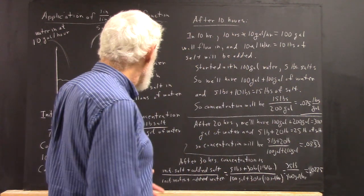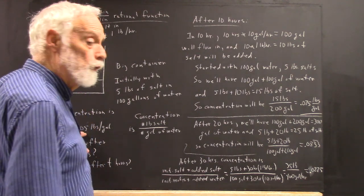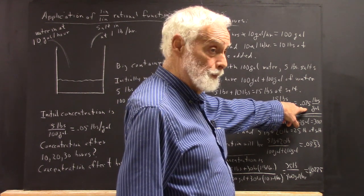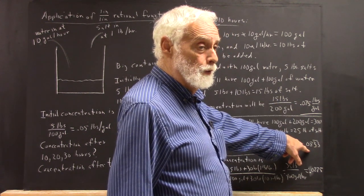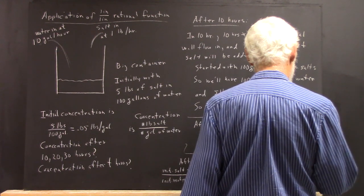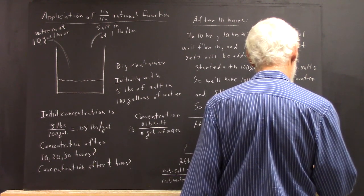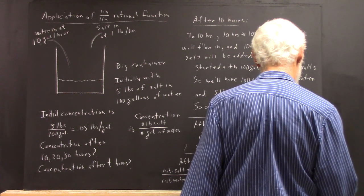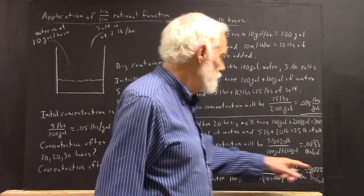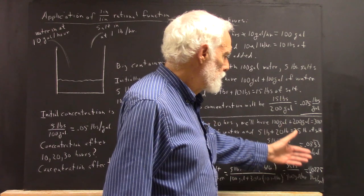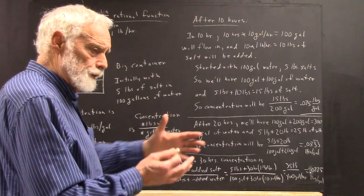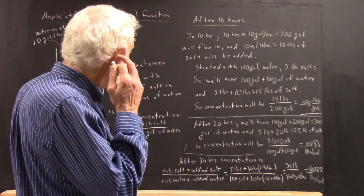We started with a concentration of 0.05 pounds per gallon, went up to 0.075, then 0.0833 repeating, and then up a little bit more to 0.0875. If you look at these numbers, we see the concentration is increasing more and more slowly. So we can ask ourselves: is there going to be some limiting concentration? Is it going to stop, or is it going to approach some limit?